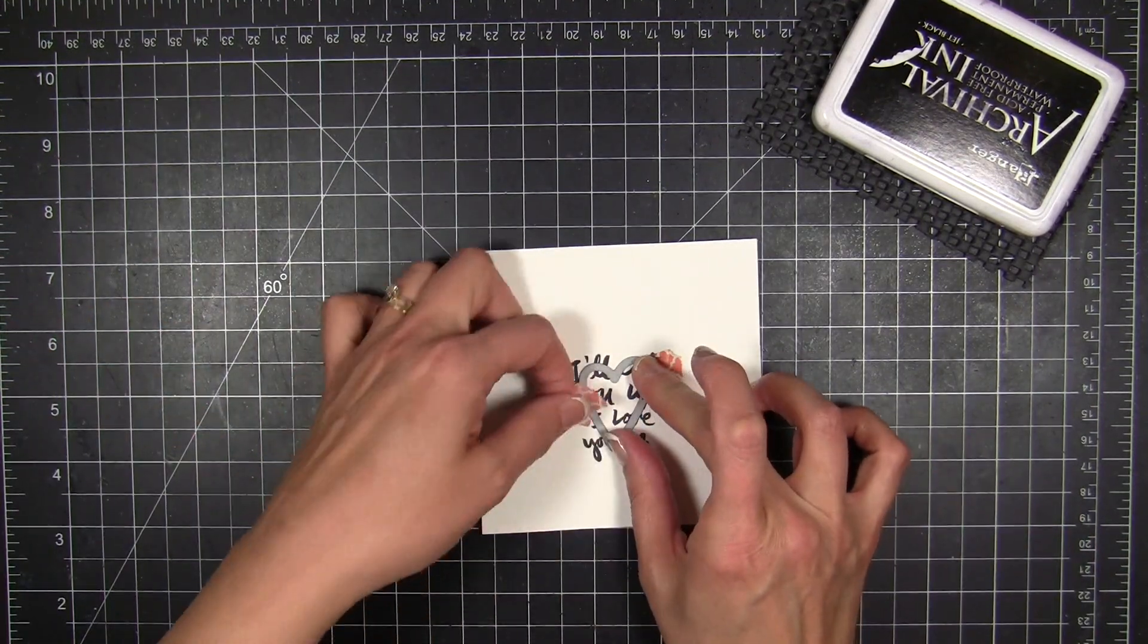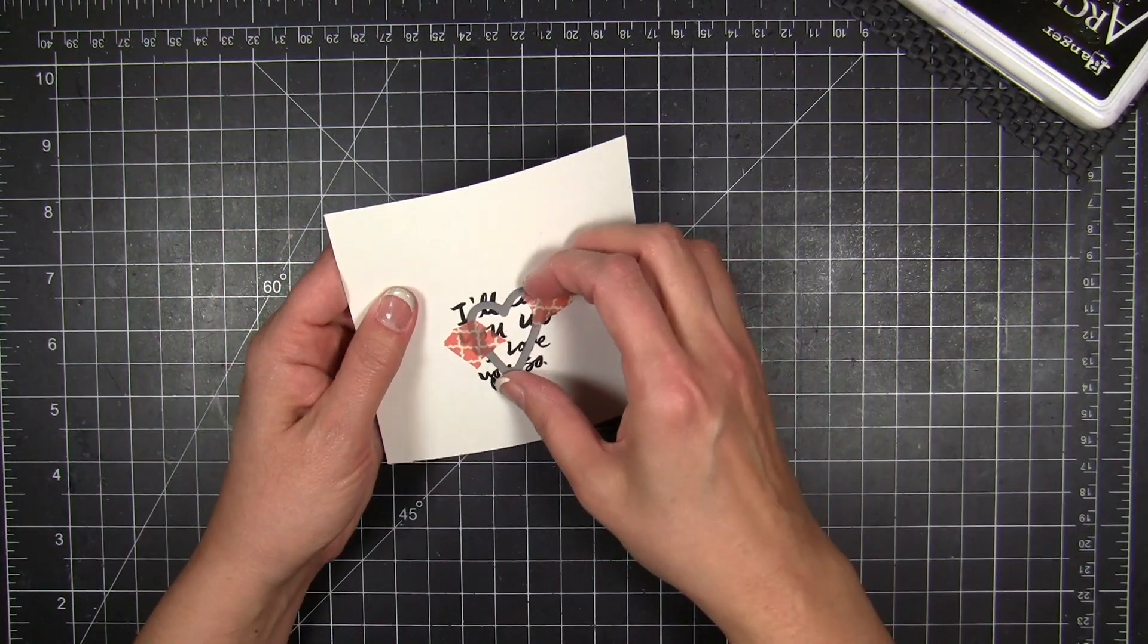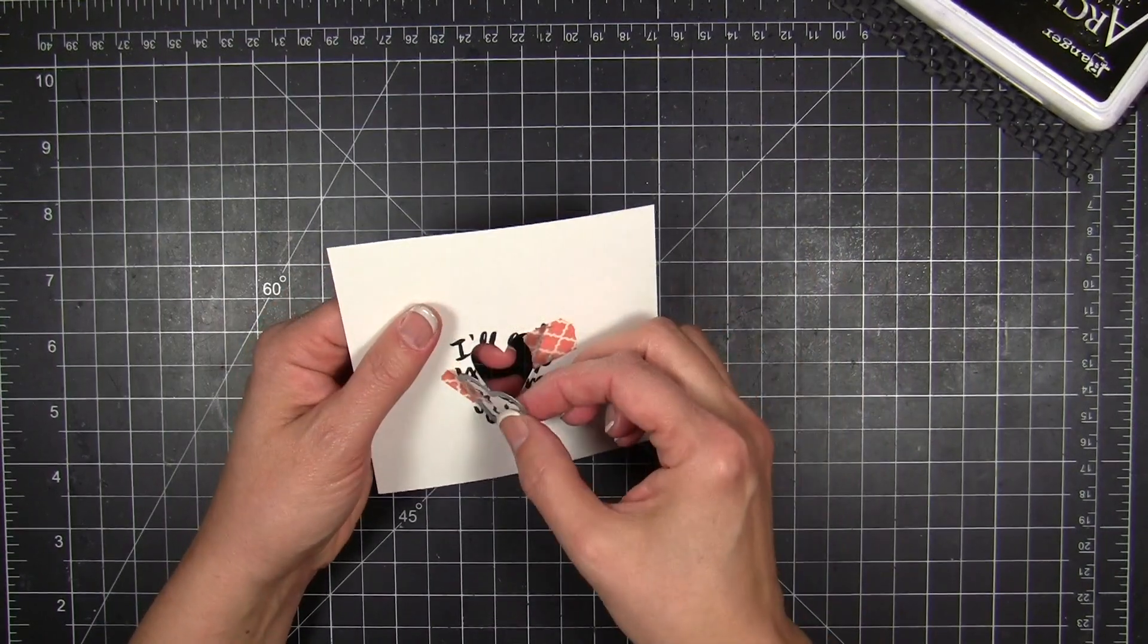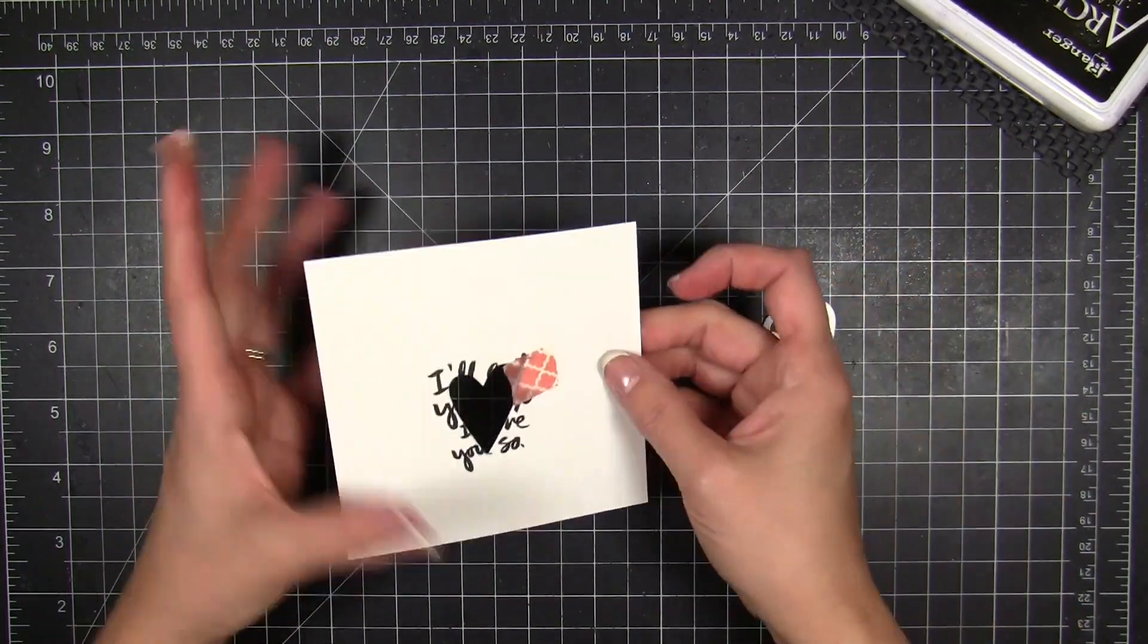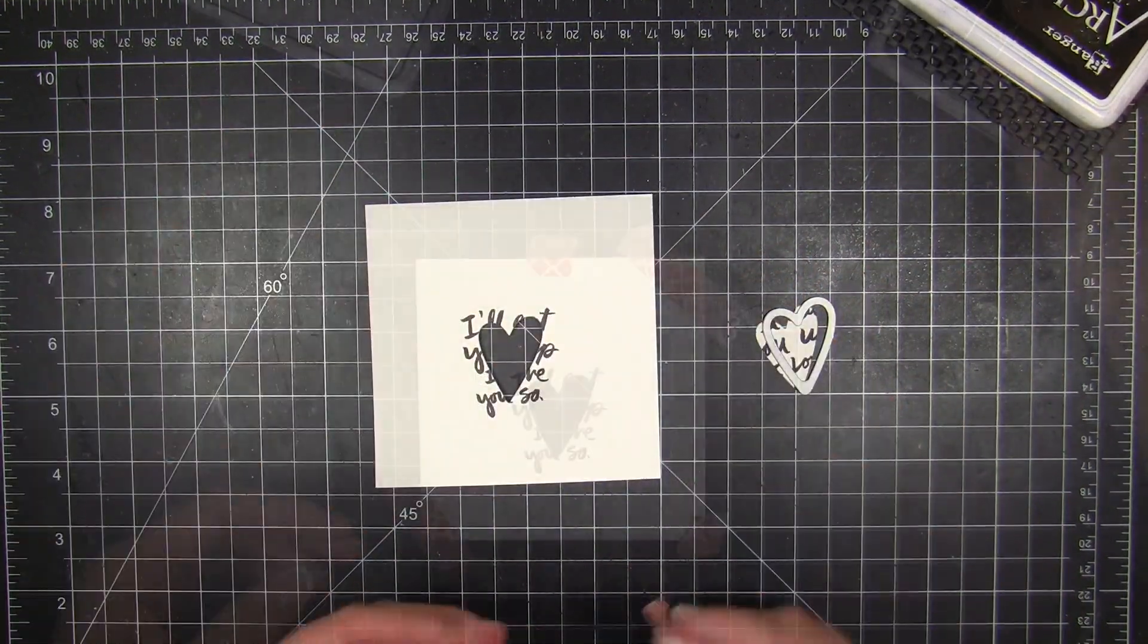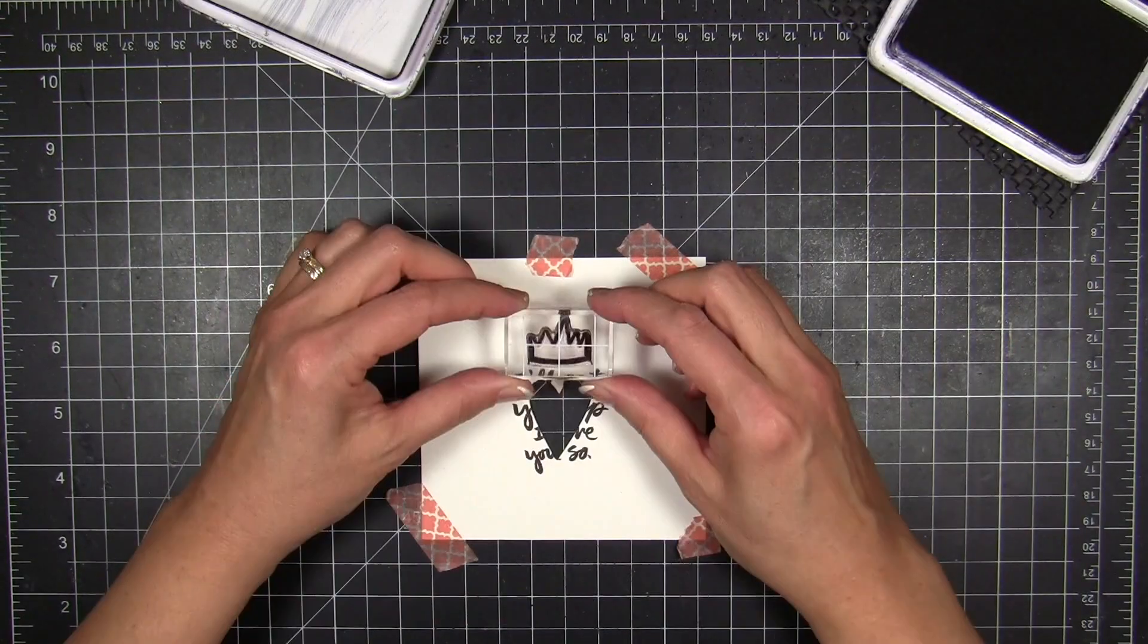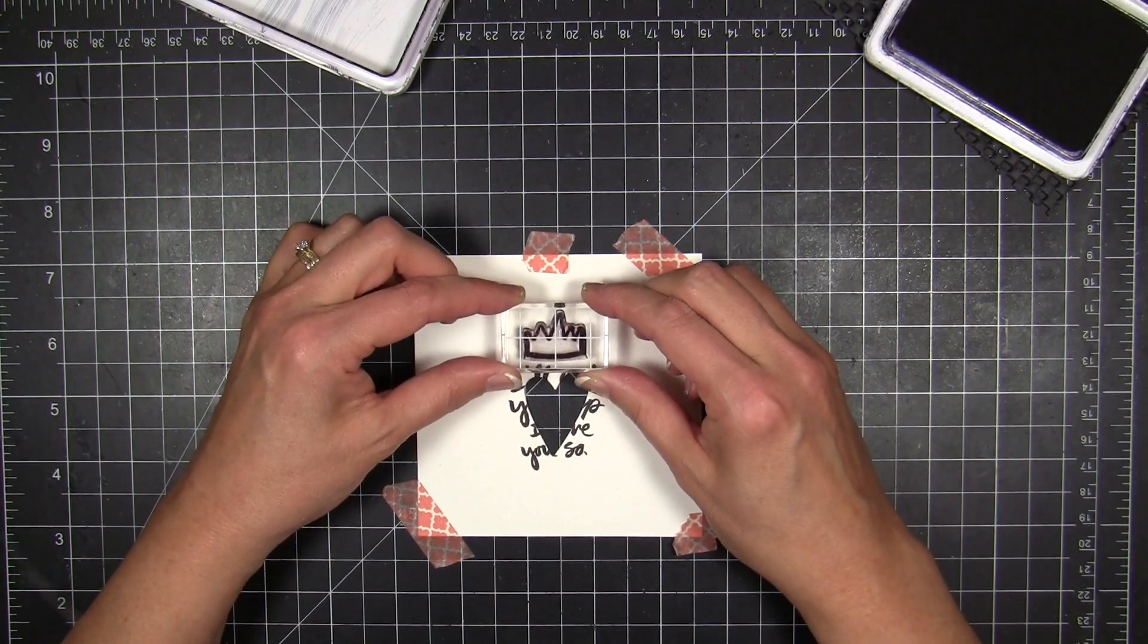Sometimes when I send something that's inked through my Big Shot, the ink will transfer on occasion to the upper pad, and then I end up transferring that to another project when I'm trying to die cut it. So I was trying to eliminate that by heat setting the ink first and then going ahead and sending it through.